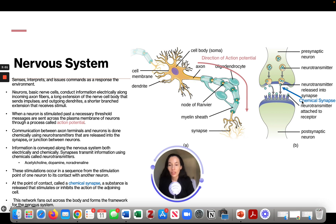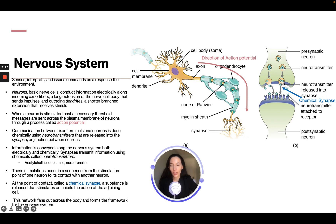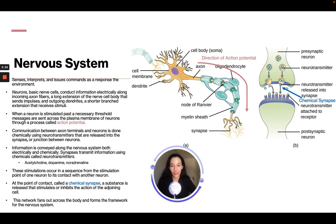These stimulations occur in sequence from the stimulation point of one neuron to its contact with another neuron. At the point of contact — the chemical synapse — a substance is released that stimulates or inhibits the action of the adjoining cell. This network fans out across the body and forms the framework of the nervous system.